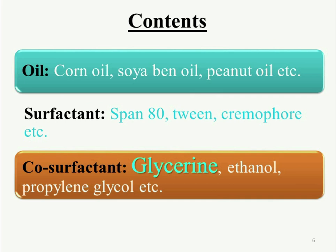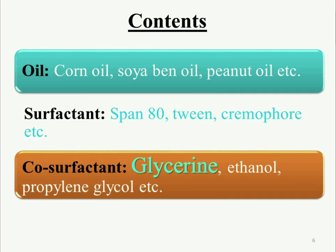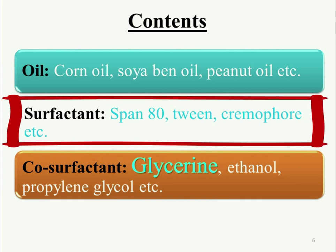Next is the surfactant. The surfactant assists the instantaneous formation of oil-in-water (O/W) droplets. The most widely recommended are non-ionic surfactants, which have a relatively high hydrophilic-lipophilic balance (HLB) and less toxicity than ionic surfactants, but they may lead to reversible changes in the permeability of the intestinal lumen. Surfactants used in SMEDDS formulation include Span 80, Tween 80, Tween 20, and Cremophor.